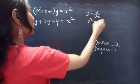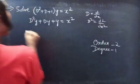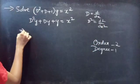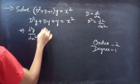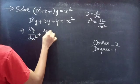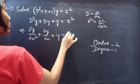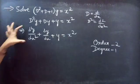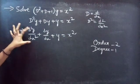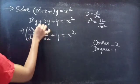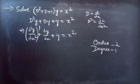Then D² will be d²/dx². We can write our given differential equation as d²y/dx² + dy/dx + y = x². Here, d²y/dx² is the highest derivative, so our order will be 2, and the highest power of the highest derivative is the degree. Degree is 1.